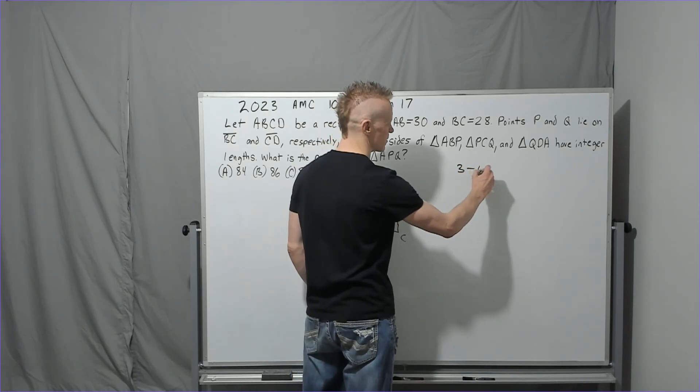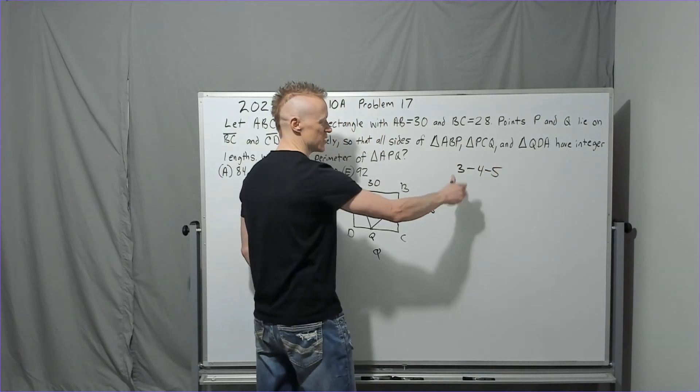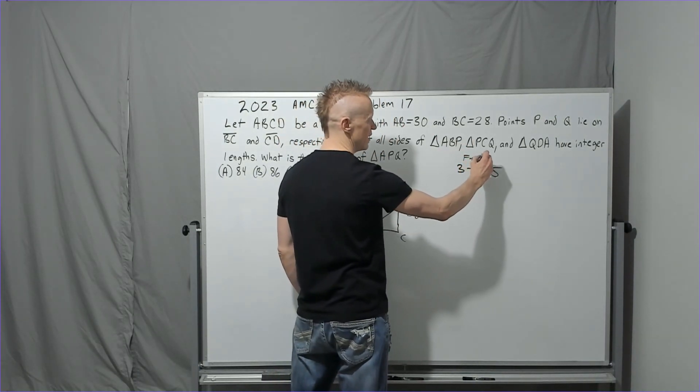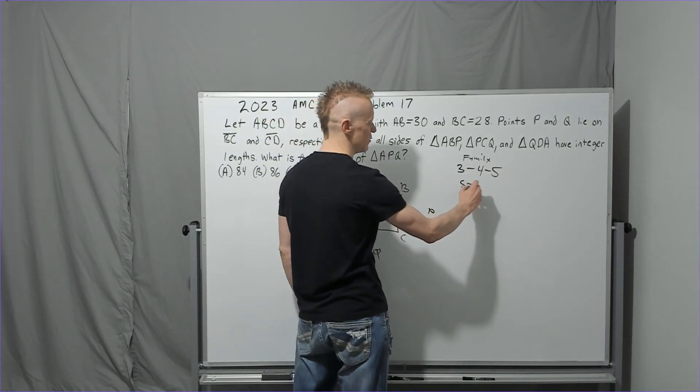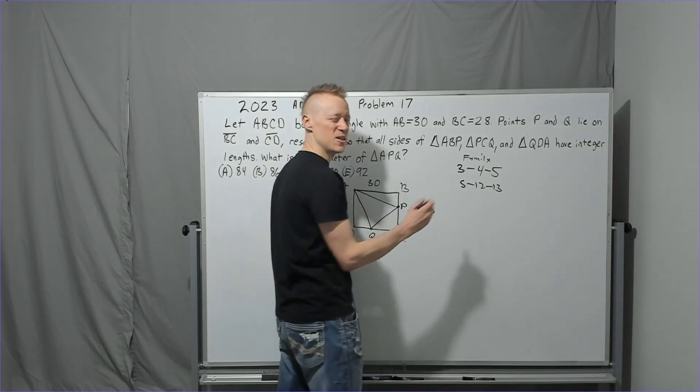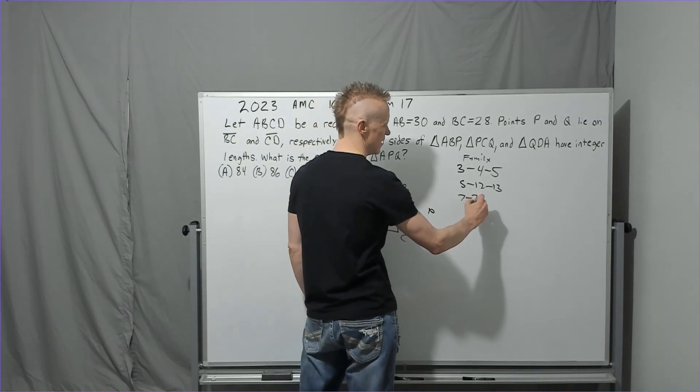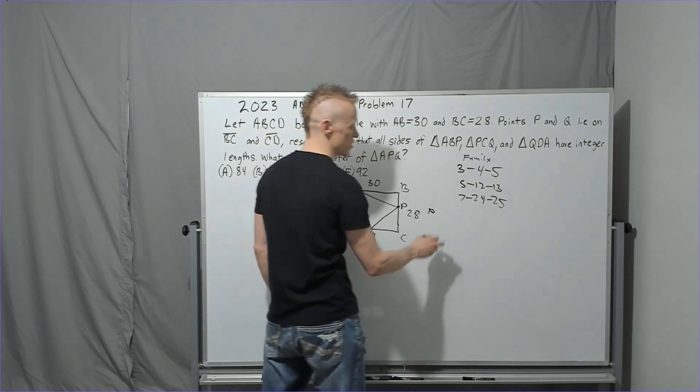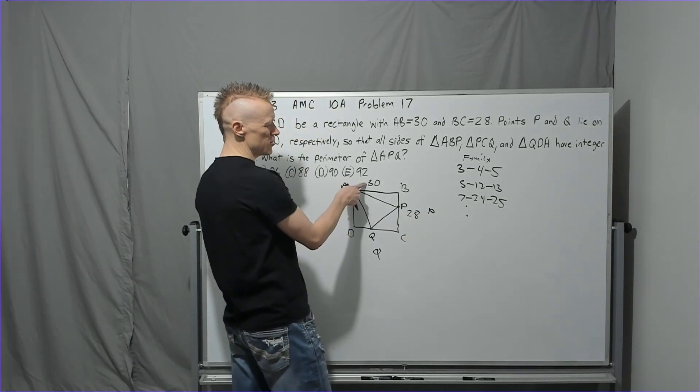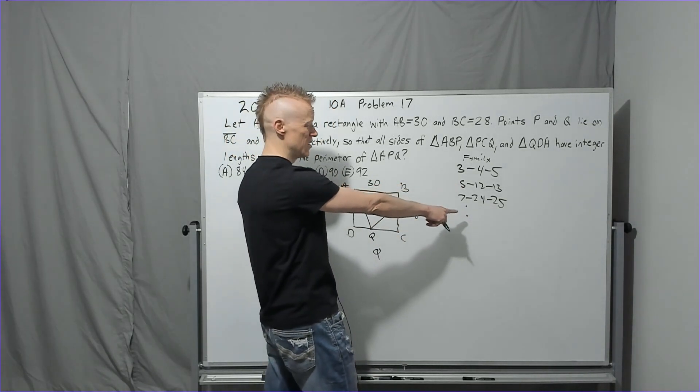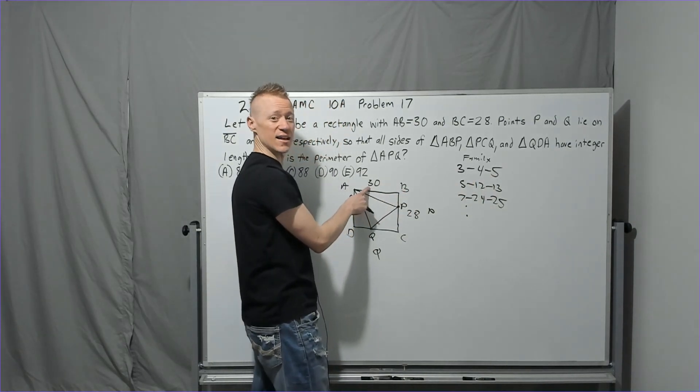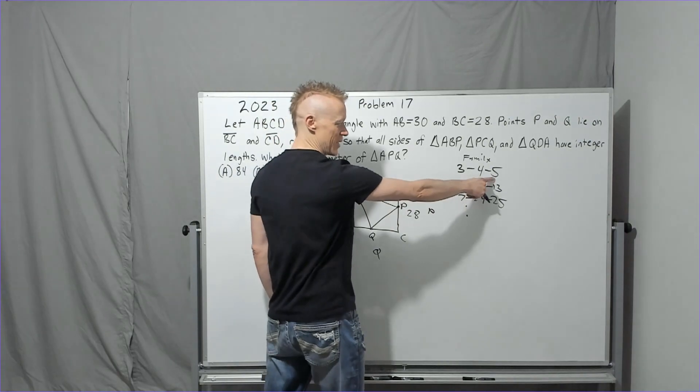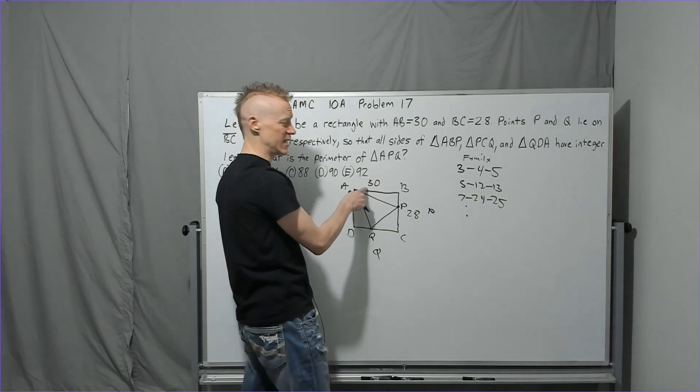So if you took my class, the small notebook class, we go over this. I call it a family type. They're not really called that, just my terminology. You can go through a few of these: 5, 12, 13. There's an easy way to recognize them. 7, 24, 25. And you look, is 30 going to be in there? Well, I could do 5 times 6, but then... because you can do multiples of these. But the 5 here times 6, is that? No. Why? Because that's a hypotenuse and this is not. So can't do that.